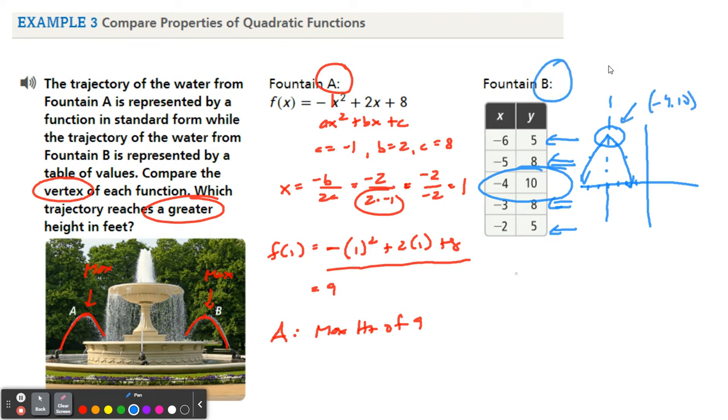So fountain B has a max height of 10, which means that fountain B has the bigger height, reaches the greater height, and that would be 10 feet. It's in feet. It says right here, in feet. So max height of 10 feet. Okay, so one of the big pushes in the state test is using multiple forms to compare. So this is an equation, that's a table of values. It could have given you a graph. So there you go, all three forms.